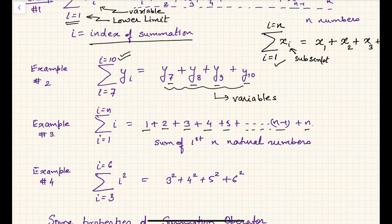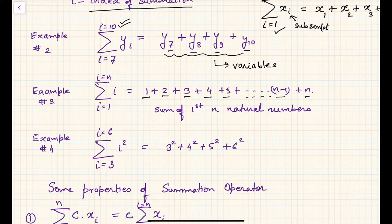In example four, i equals 3 to i equals 6. You might be thinking why is i not starting from 1? i can have any starting value as long as it is less than the upper limit. This is summation of i squared: 3 squared plus 4 squared plus 5 squared plus 6 squared. You will not write 7 squared because the upper limit of i is 6.